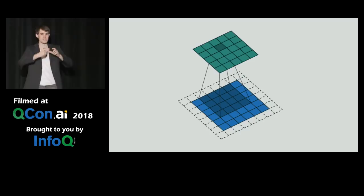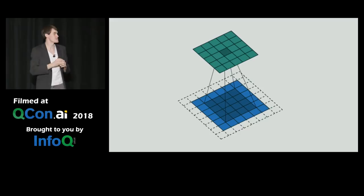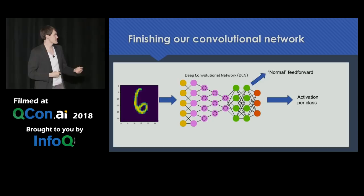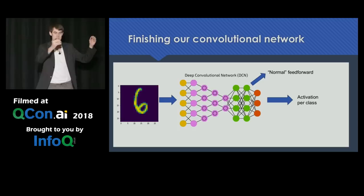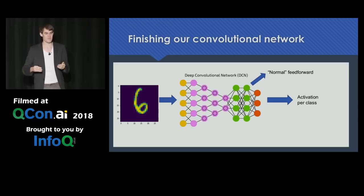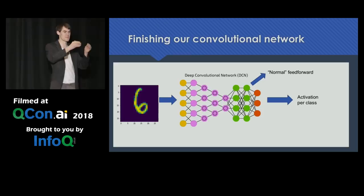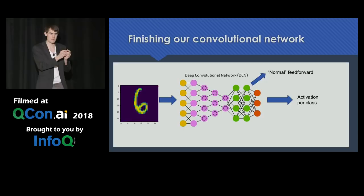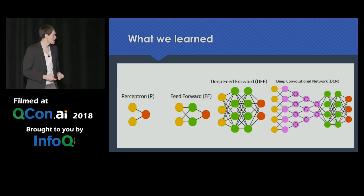You have an input image, and you slide this detector over it, which extracts all these features and puts them into a new, smaller image with all the features constructed from that. At the end, for your convolutional neural network, you take the output — these spatial features — and feed them through a normal feedforward network. You have an activation per class, and if the activation for one class was too high, you propagate that error through the network and say: maybe the weight on this one feature we detected should have been a bit different.